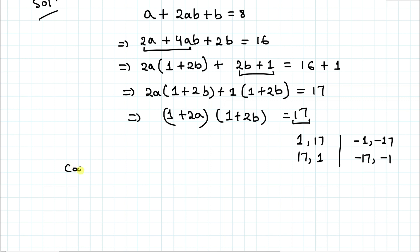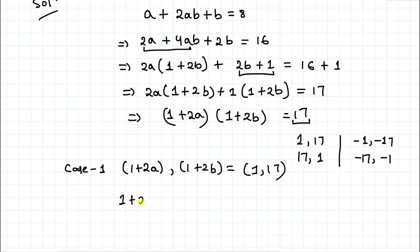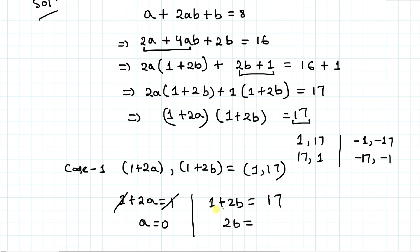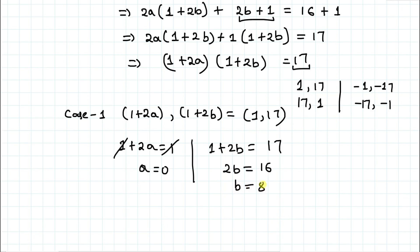In Case 1, let's consider 1 plus 2a equals to 1 and 1 plus 2b equals to 17. The 1s cancel out, giving us a equals to 0. And for b, we have 2b equals to 16, so b equals to 8. So here a comma b equals to 0 comma 8.